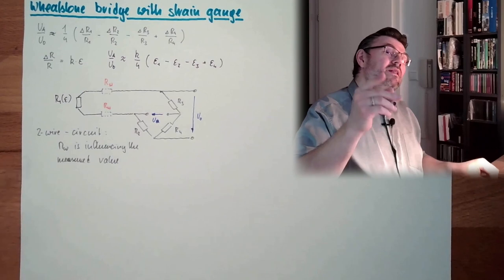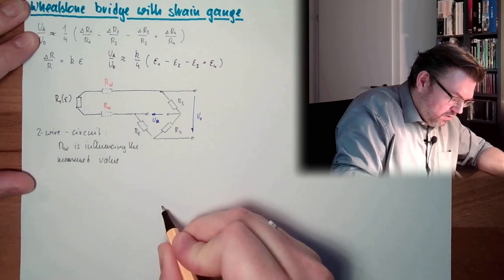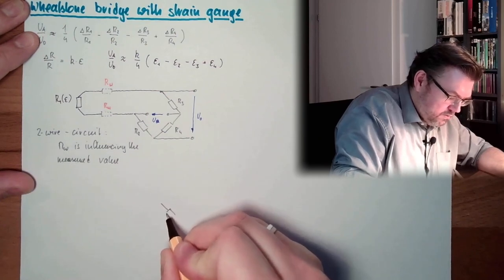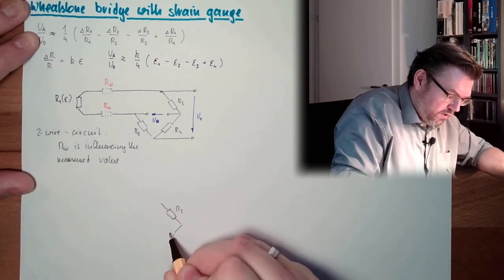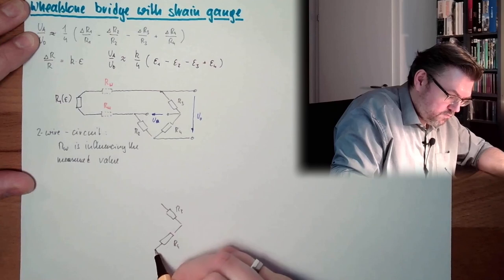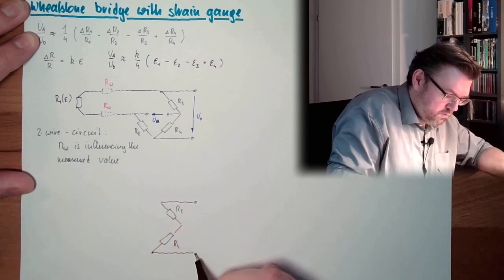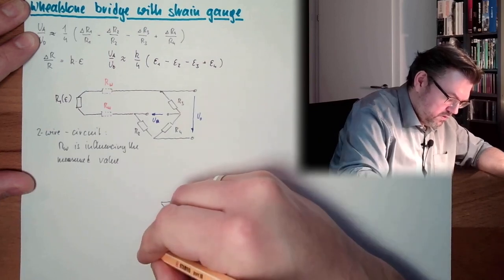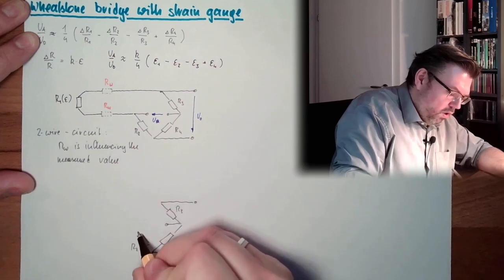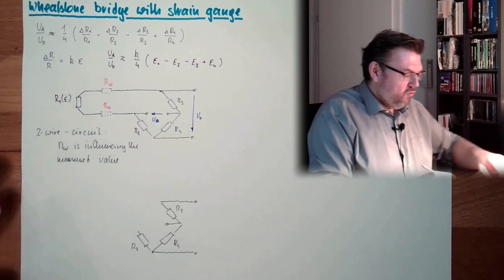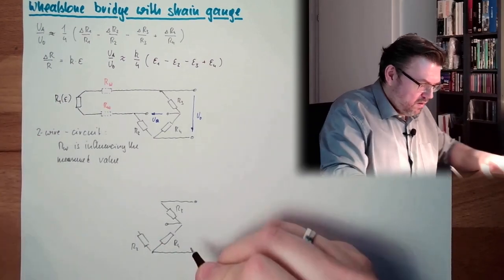I make a little trick. I do almost the same circuit — here we have R3, R4, U0, and R2, all fixed. Here we have U0 and UA.